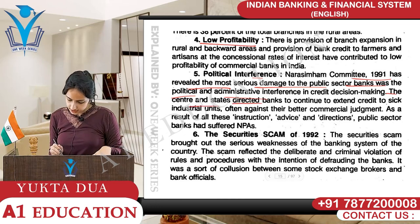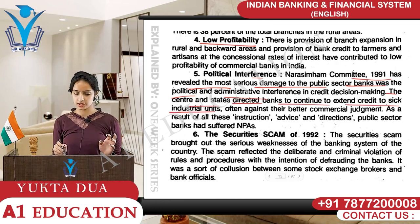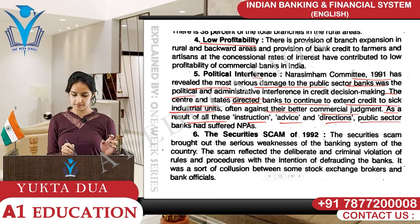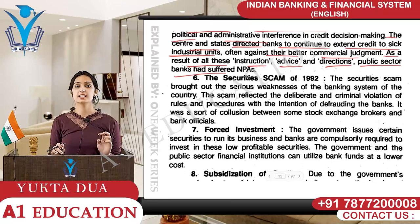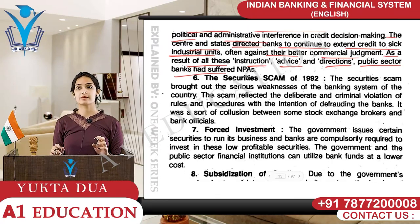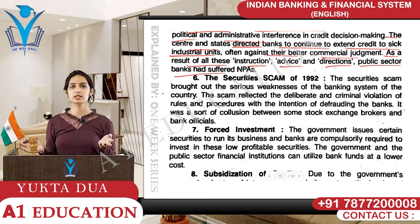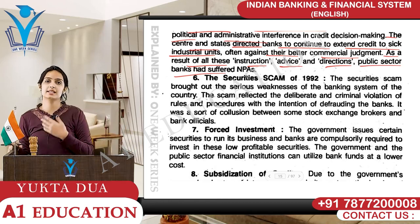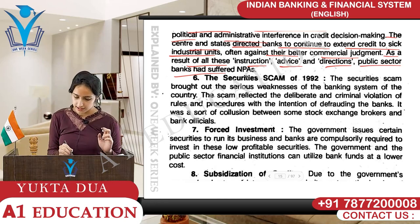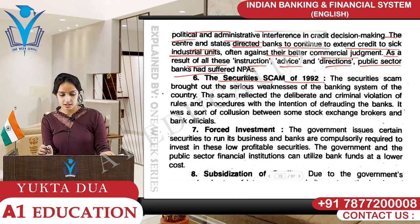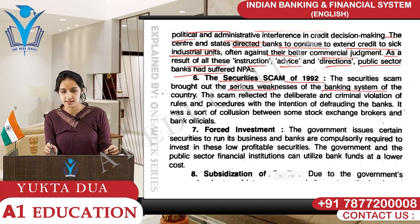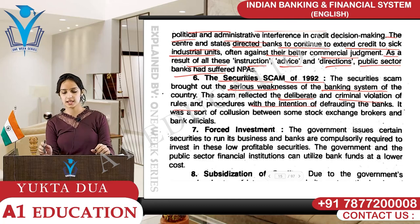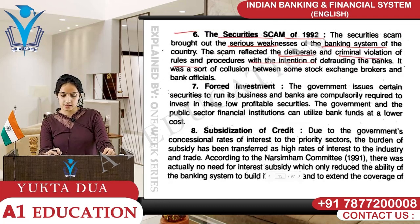The center and state directed banks to continue to extend credit to sick industrial units, often against their better commercial judgment. As a result of all these instructions, advice, and directions, public sector banks have suffered NPAs - non-performing assets. If someone you lent money to becomes insolvent, all their property is gone and they have no money left to pay you back - that becomes a bad debt, a non-performing asset. The Security Scam of 1992 - the Harshad Mehta scam - reflected a serious weakness in the banking system due to deliberate and criminal violation of rules and procedures with the intention of defrauding the banks.